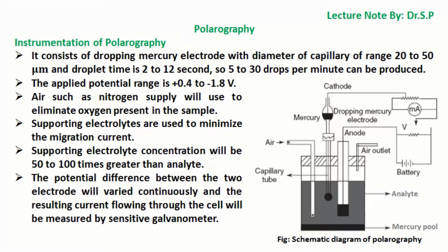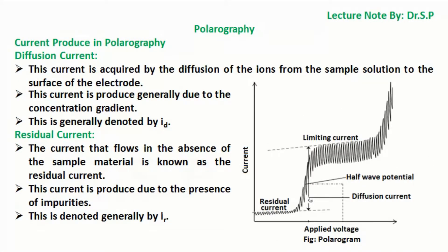As shown in the figure, the dropping mercury acts as cathode, which is negatively charged and polarizable. The mercury pool acts as anode, which is positively charged and non-polarizable. The potential difference between the two electrodes is varied continuously, and the resulting current flowing through the cell is measured by a sensitive galvanometer.